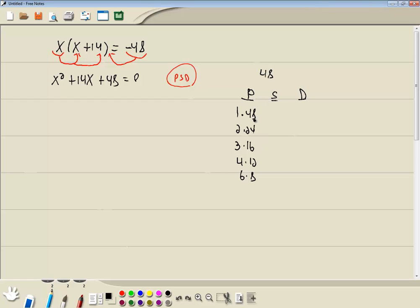S column, S for sum. We want to add these together. 1 plus 48 is 49, 2 plus 24 is 26, 3 plus 16 is 19, 4 plus 12 is 16, 6 plus 8 is 14.